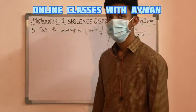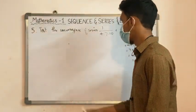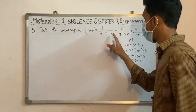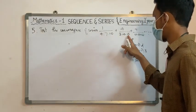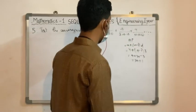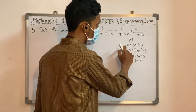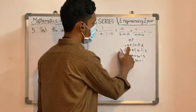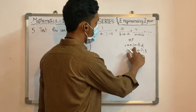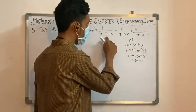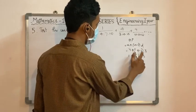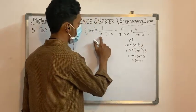Welcome back to the fifth question: does the series 1/(4×7×10) + 1/(4×7×10×13) + 1/(9×10×13×16) converge? The terms are in the form of an arithmetic progression, so we use the AP formula: a + (n-1)×d, where a is the first term, n is the number of terms, and d is the common difference. The first term is 4, and the common difference is 7 minus 4, which equals 3.